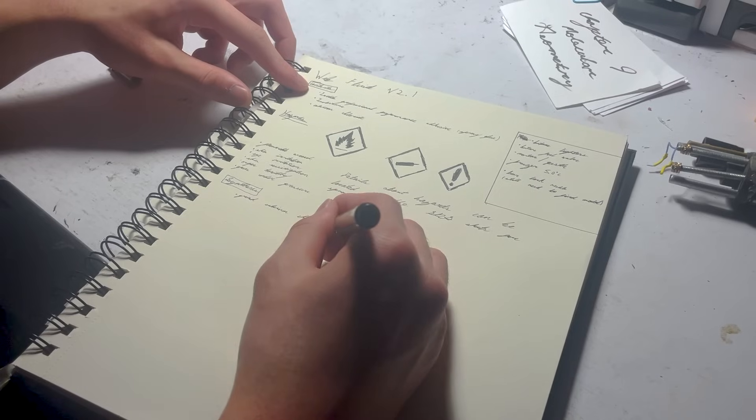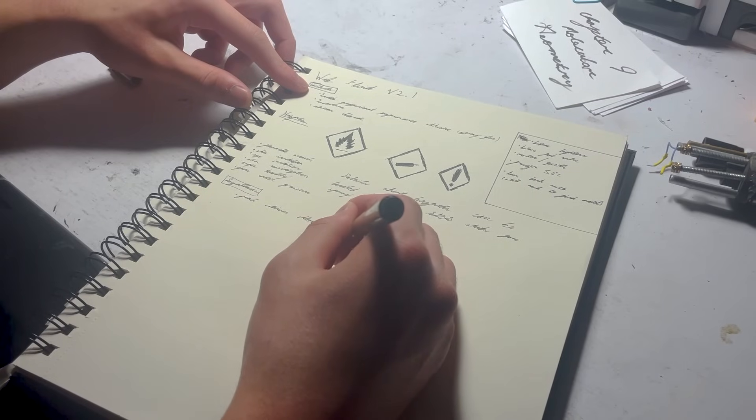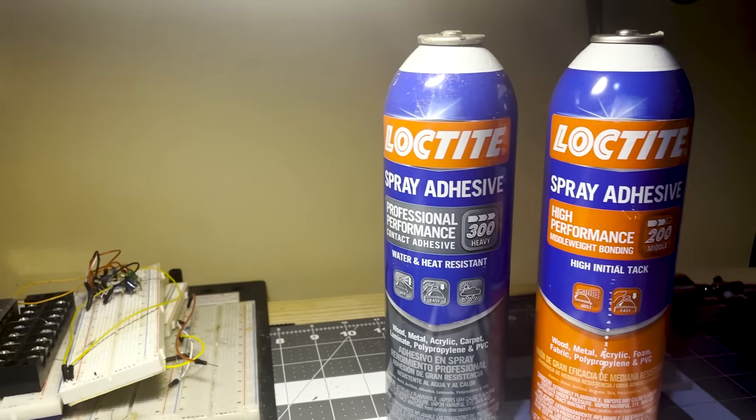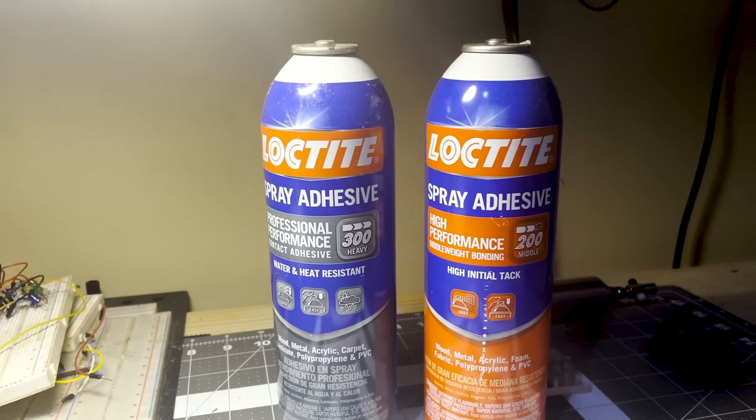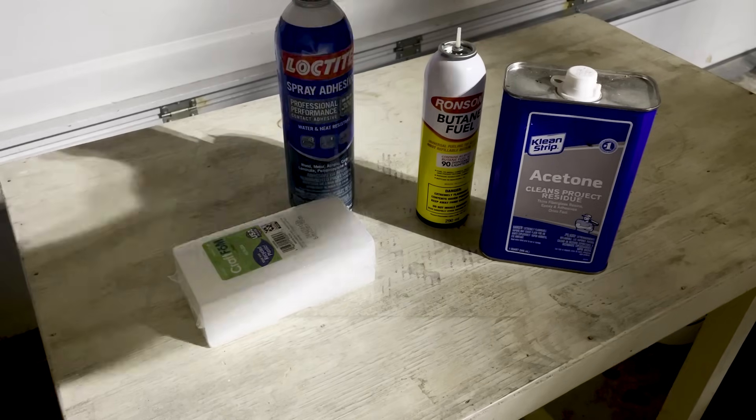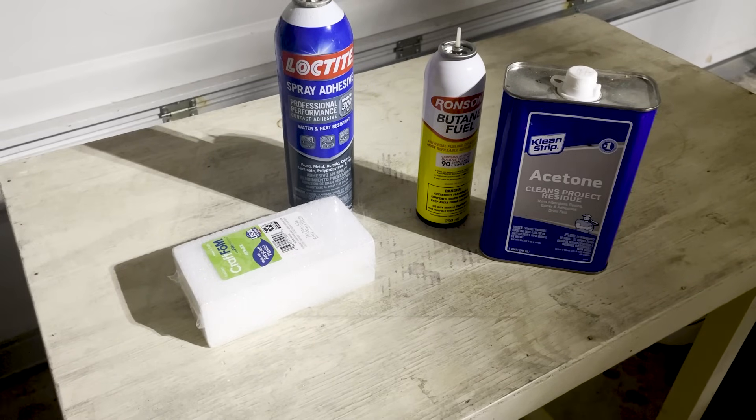Well, to understand that, we have to take a deeper look into what comprises my web fluid. My current formula is actually quite simple in composition. The aforementioned primary component is professional performance Loctite spray adhesive along with butane gas and polystyrene, also known as styrofoam.